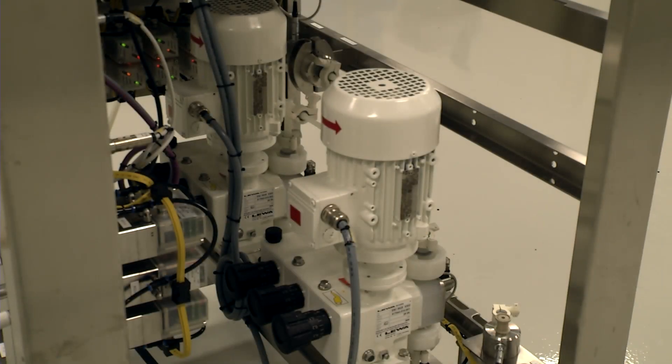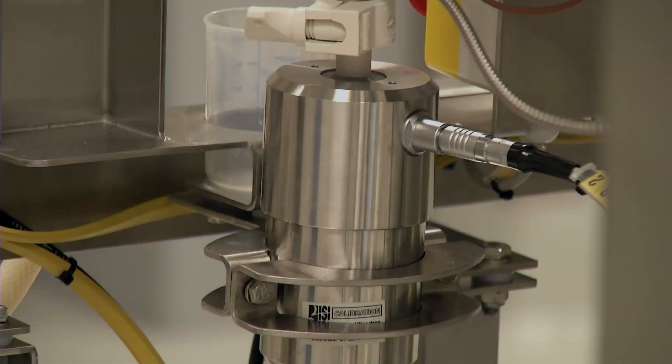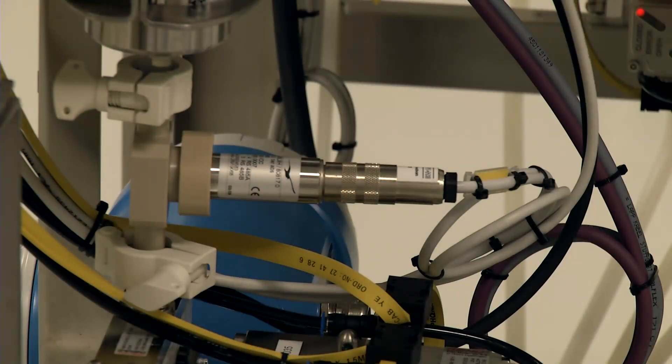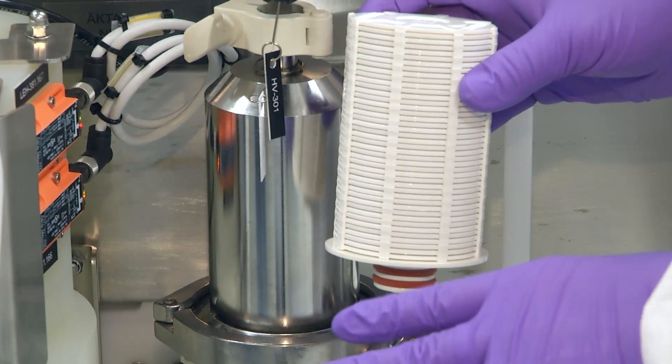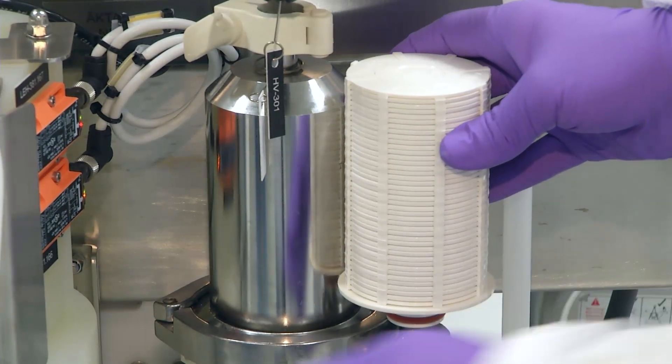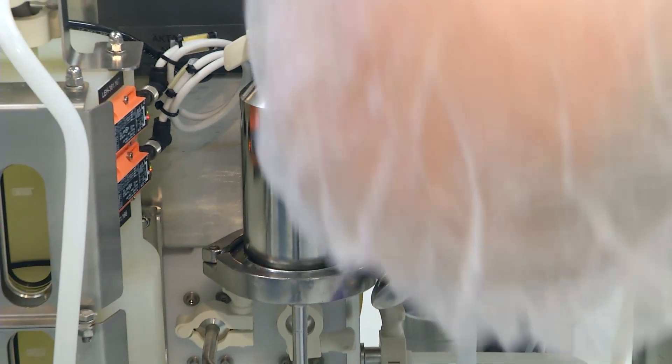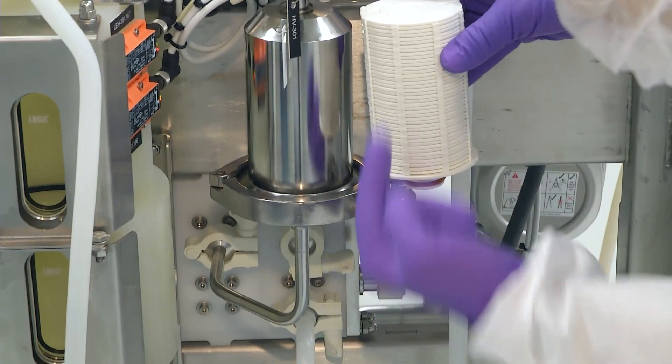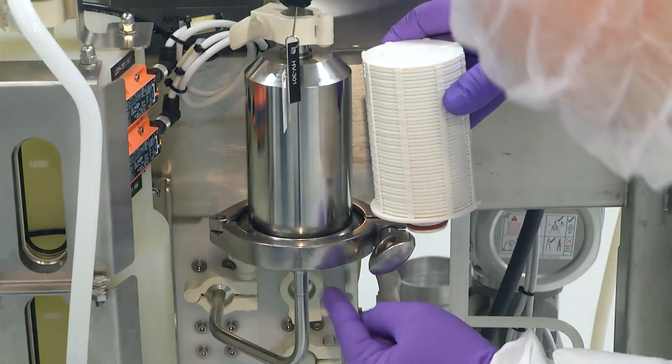The pump draws the lysate from the vessel, past the first conductivity sensor and pressure sensor, and through the 0.45 micron pre-filter. The pre-filter removes any residual cell debris or other particulates that may have contaminated the solution.